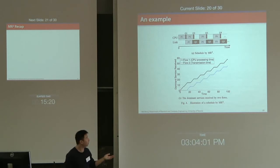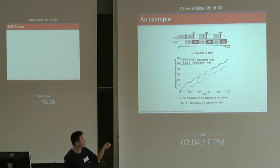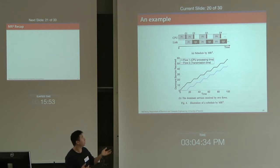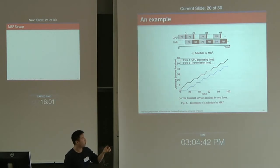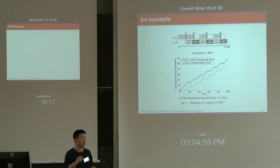Applying this technique, the scheduling results look like this. Packet Q1 is processed immediately because it is the first packet of flow 2. Packet P2 is also processed immediately because its previous packet P1 has already started transmission on the link bandwidth. But for packet P3, although we could process it right after Q2 finishes in the CPU, we must wait until P3's previous packet P2 starts transmitting on the link bandwidth. Looking at the dominant services received by both flows, the service gap is bounded by a small constant.